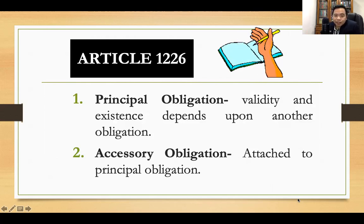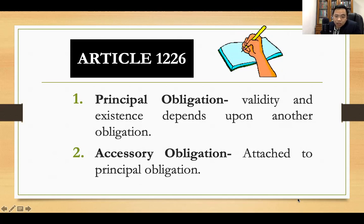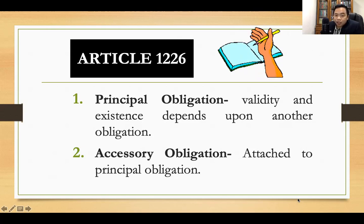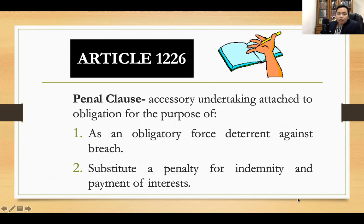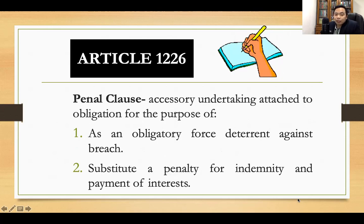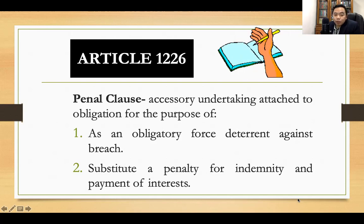A principal obligation is the one whose validity and existence does not depend upon another obligation. An accessory obligation's validity and existence depends upon another contract; it is attached to the principal obligation. A penal clause is an accessory obligation or accessory undertaking attached to the principal obligation for two purposes: number one, as an obligatory force or deterrent against breach or violation of the contract, and number two, as a substitute penalty for indemnity and payment of interest.